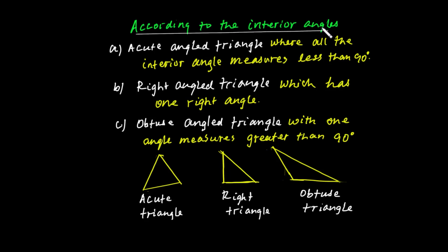Triangles are also classified according to their interior angles. An acute angle triangle is one where all interior angles measure less than 90 degrees.